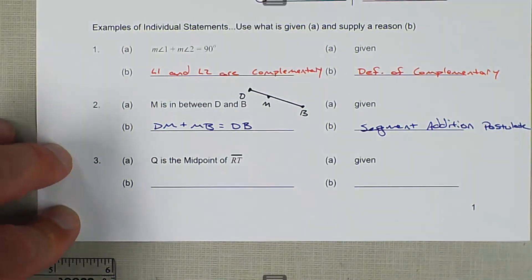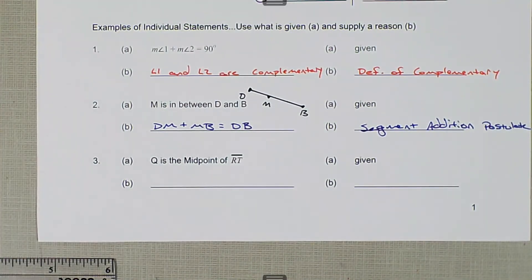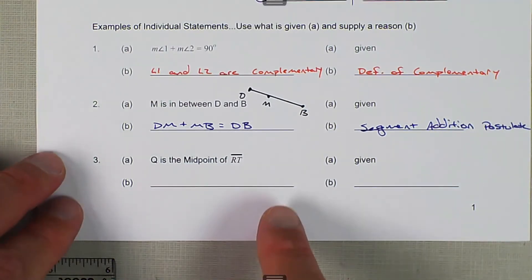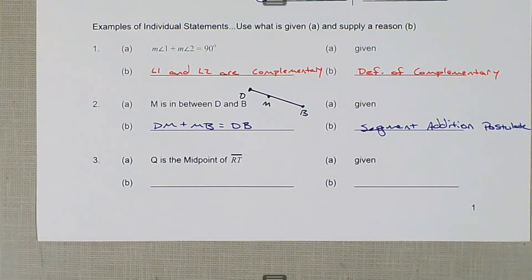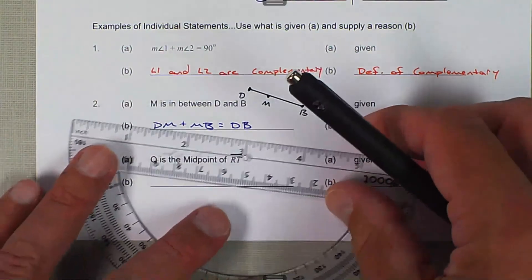Next, we have Q is the midpoint of RT, of line segment RT. That's pretty similar to this, but the difference is that this says it's actually the midpoint. So if we were going to sketch this real quick...